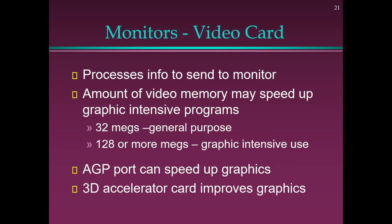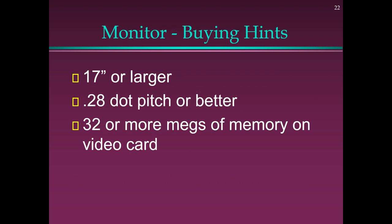Monitor Video Card: Processes information to send to the monitor. The amount of video memory may speed up graphic-intensive programs — 32 MB for general purpose, 128 MB or more for graphic-intensive use. An AGP port can speed up graphics, and a 3D accelerator card improves graphics. Monitor buying hints: 17-inch or larger, dot pitch .28 or better, 32 MB or more of memory on the video card.